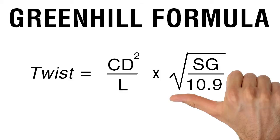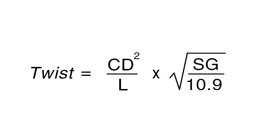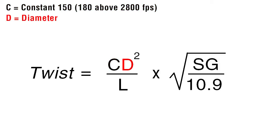The Greenhill formula is the standard rule of thumb equation for calculating theoretical optimal barrel twist. The formula for twist is equal to a constant, 150 for muzzle velocities under 2800 fps and 180 for above, times the bullet's diameter squared over the bullet's length, then multiplied by the square root of the bullet's specific gravity over 10.9. The specific gravity is based on the bullet's material.